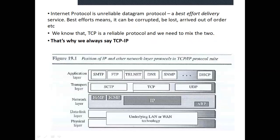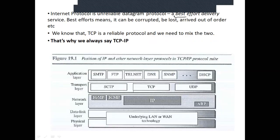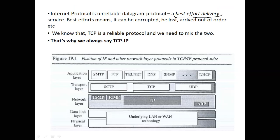Now, where does IP protocol fall? IP protocol is not reliable in itself — it's a best-effort service: it will try its best but cannot guarantee delivery. Packets can be corrupted, lost, or arrive out of order. For example, if I have a 10 MB file sent in 10 packets of 1 MB each, they could arrive in the order 3, 4, 1, 6, 5, 2. Some packets may be lost or corrupted, or data may have been manipulated.